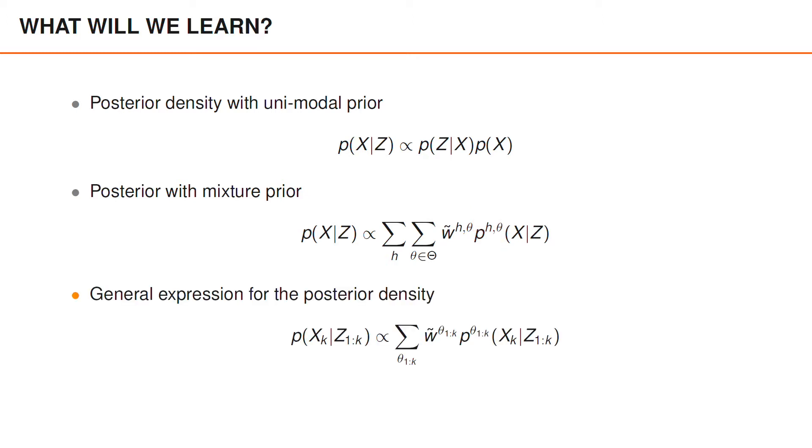And lastly, from all of this, we will arrive at a general expression for the posterior density at time k given measurements up to and including time k. And just like in single object tracking, we will have a sum over data association sequences from the first time step to the current time step. We will have a weight for each data association sequence and a density quantity conditioned on the data association sequence.